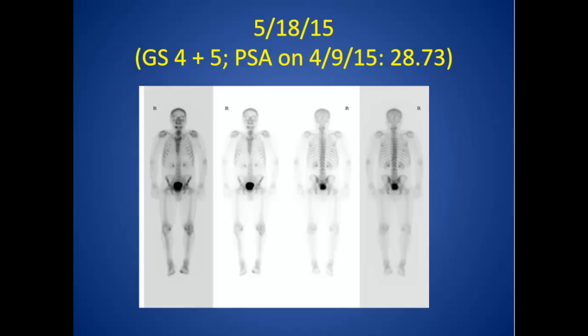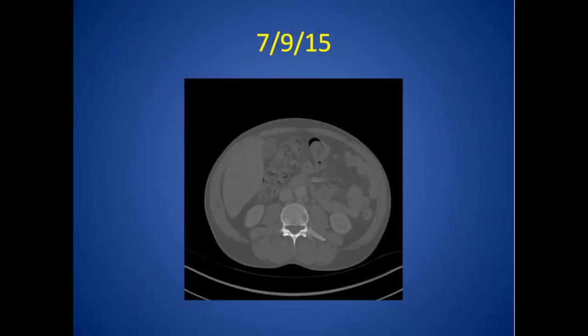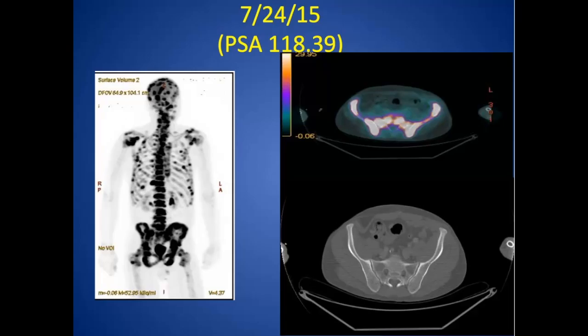To show the power of sodium fluoride — we had a recent case: May 18th, Gleason 4+5, PSA 28.7. On the standard bone scan we didn't see any bone mets and called it negative. Then in July a CT showed a subtle lucency, which is pretty nonspecific — since it's prostate cancer it could be lytic, but we typically prefer to see sclerotic disease because it's more common.